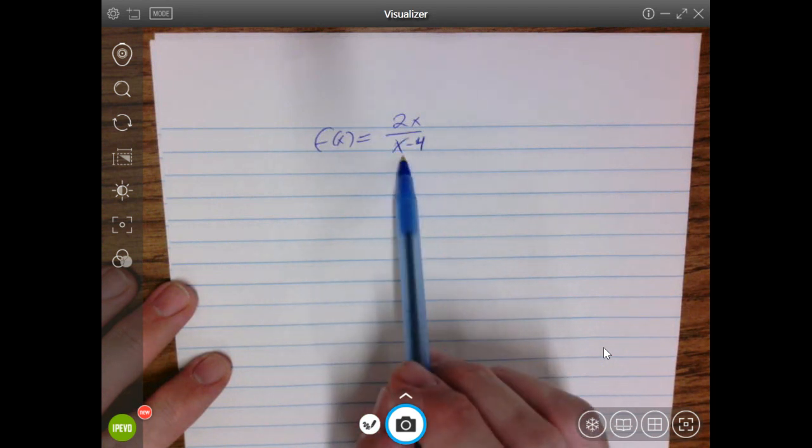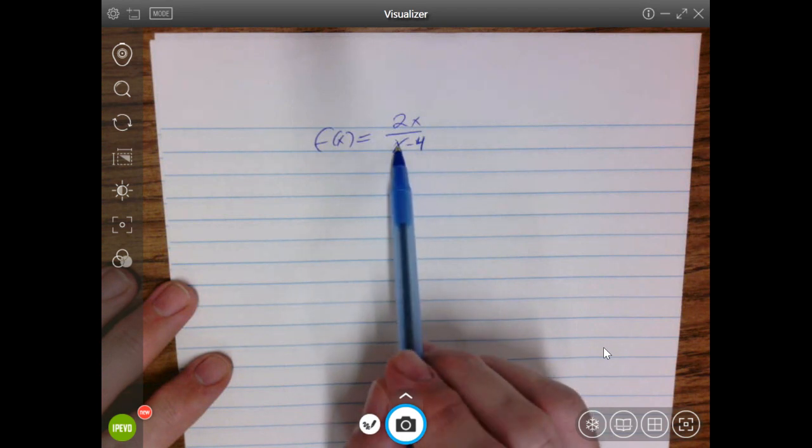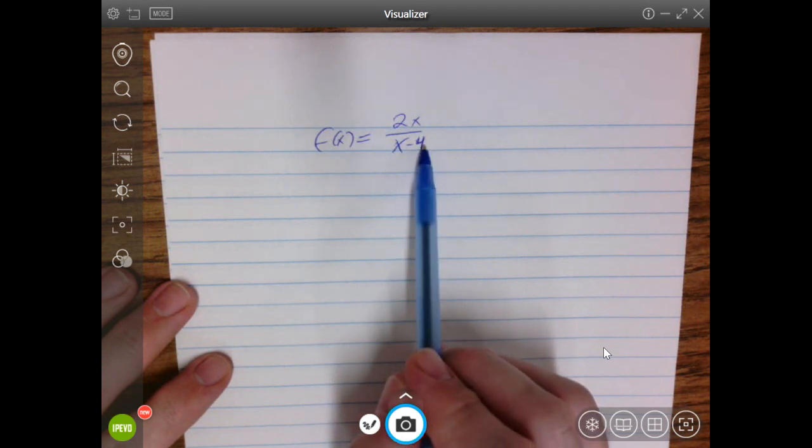what can you possibly plug into this equation to yield y values that actually work? So hopefully your instincts are looking at the denominator and realizing there's a problem here. If x is 4, we have a denominator of 0, which is going to cause the issue.